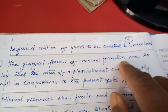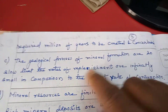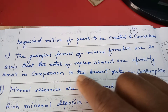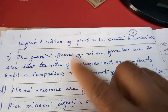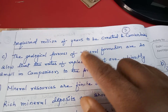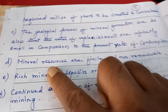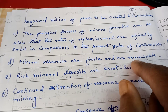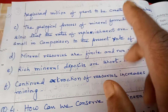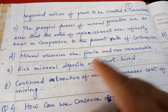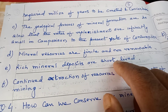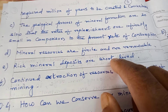The geological processes of mineral formation are so slow that the rates of replenishment are infinitely small in comparison to the present rate of consumption. Rate of consumption is faster; rate of formation is slower. Mineral resources are finite and non-renewable — you cannot renew them immediately. It will take millions of years for their formation, and rich mineral deposits are short-lived and will get exhausted some day.